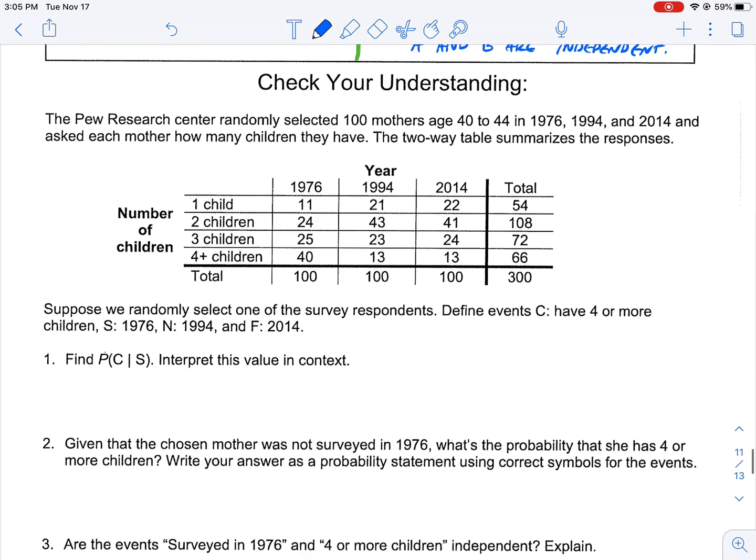So maybe your head is spinning there and you're like, I'm not exactly sure what that means. Let's do a little example here and you can get an idea of what we're evaluating against one another. So here is a big giant list of data that talks about a Pew Research study that selected 100 mothers from age 40 to 44 in three different years: 1976, 1994, and 2014. They asked each mother how many children they have, and then the two-way table summarized these results. A good rule of thumb for a check your understanding like this would be to pause it and try to do it on your own or get as far as you can and then come back and see what I have to say about it.